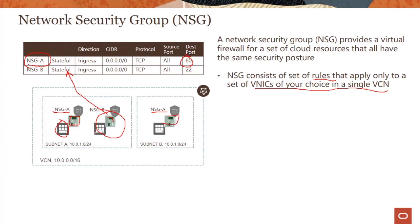How is NSG different from a security list? With a security list, both instances in the same subnet share the same security posture — meaning if you open port 80, it opens for all instances; if you open port 22, it's open or closed for all instances. Remember, security list is applied at the subnet level, and all instances in that subnet share the same security posture.